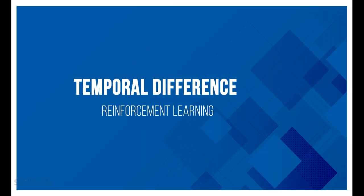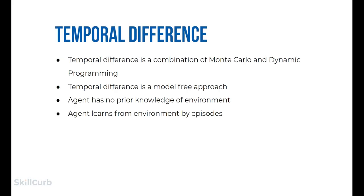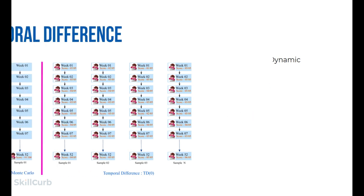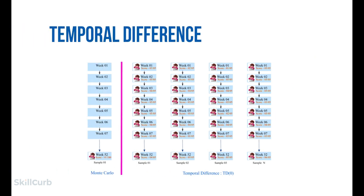Temporal difference (TD) is an agent learning from an environment through episodes with no prior knowledge of the environment — it takes a model-free, unsupervised learning approach, learning from trial and error. If Monte Carlo learning is like an annual examination where a student completes an episode at the end of the year, then TD learning is like a weekly or monthly examination. Students adjust their performance based on their score — the reward received after every small interval — and the final score is the accumulation of all tests, which is the total reward.